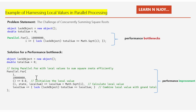In the solution code, we have Parallel.For starting at 1, ending at 1 million. The first lambda expression initializes the local value (local sum) to 0.0 for each parallel task. The second lambda (i, state, localSum) => localSum + Math.Sqrt(i) calculates the square root and accumulates it locally. Finally, the third lambda combines the local sum with the grand total: lock(lockObject) { totalSum += localSum; } — placing the lock only around the final aggregation, making the process much more efficient.